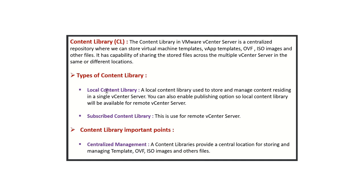The Content Library has the capability of sharing stored files across multiple vCenter Servers in the same or different locations. There are two types of Content Library. First is the local content library — a local content library is used to store and manage content residing in a single vCenter Server. You can also enable the publishing option.